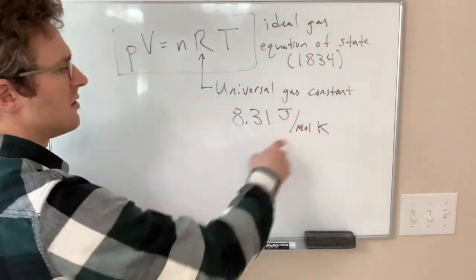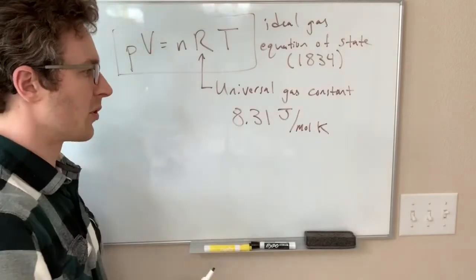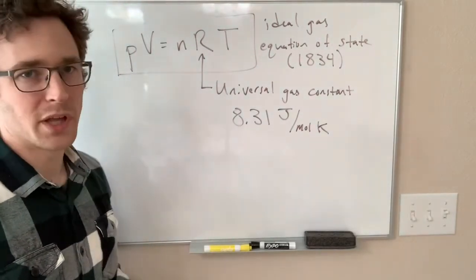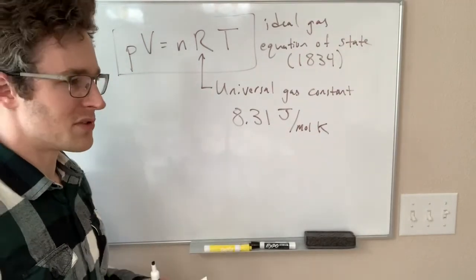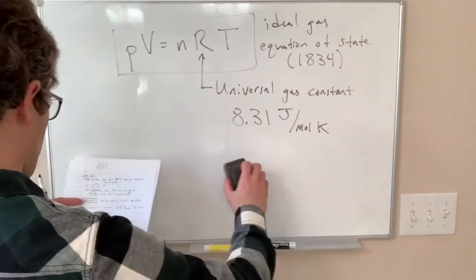Some of you may have seen the universal gas constant written in different units, like liter atmospheres per mole kelvin or something like that. We're only into joules per mole kelvin, so use 8.3, not 0.08.